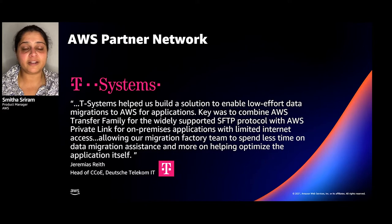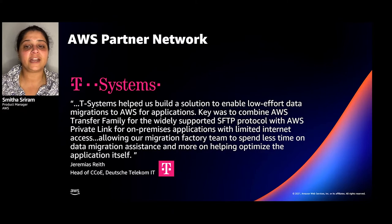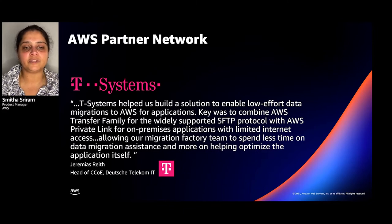Similarly, T-Systems, a consultancy in Europe, helped their customer Doge Telecom migrate file transfer applications using SFTP. T-Systems helped them move all file transfer services to AWS using Transfer Family so their team would spend less time on data migration and operational aspects of managing file transfers, and more time on application building within AWS — applications more core to their business.